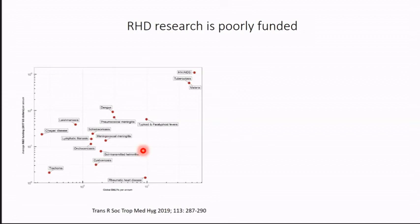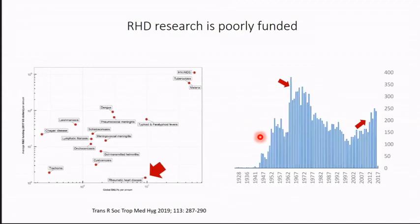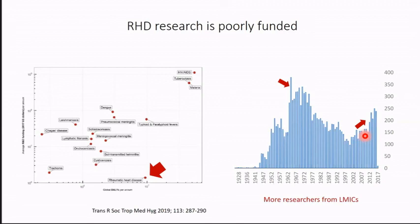RHD research is poorly funded. Looking at a recent publication of funding against DALYs for each disease, you'll see that HIV, tuberculosis, and malaria received quite a lot of funding, but for a substantial burden of DALYs, rheumatic heart disease receives very little funding. Despite this, RHD research is now tending to increase, and I think this is because there are more researchers doing RHD research in LMICs themselves — that is one positive.